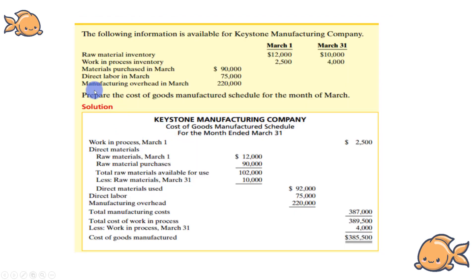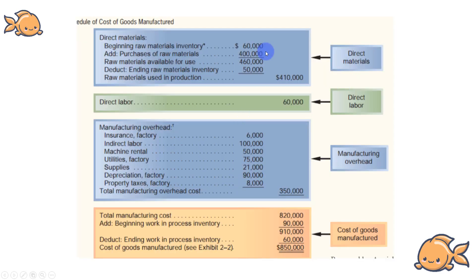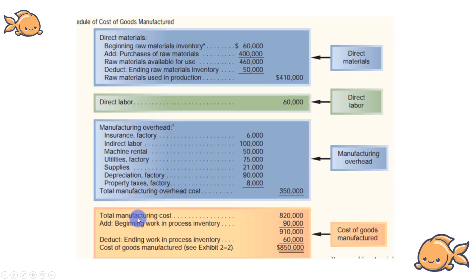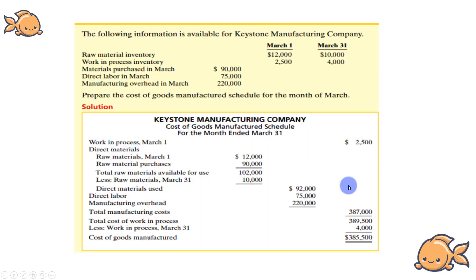Manufacturing Overhead figures are applied next. The overhead amounts include figures higher than 2,000,000. Adding these together gives us the total manufacturing cost of 3,663,000.